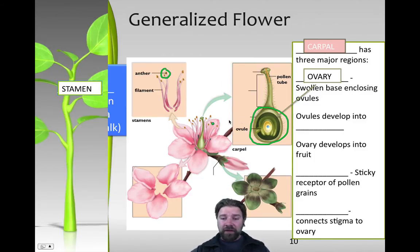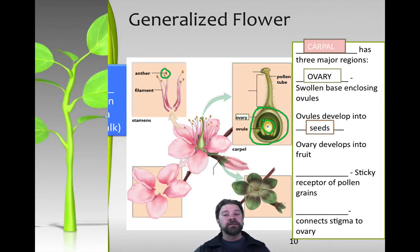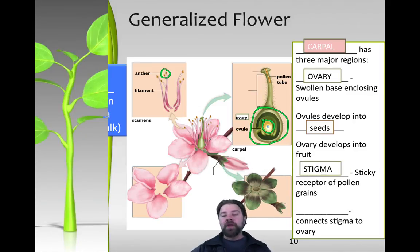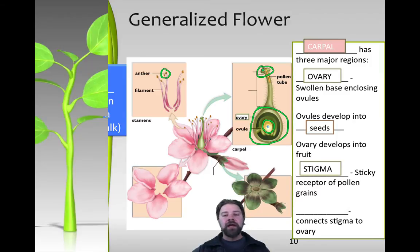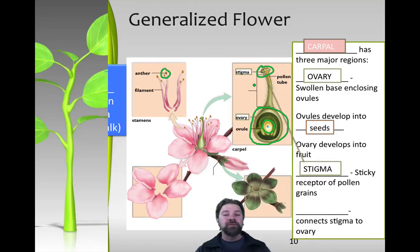The ovary contains ovules, which if fertilized will eventually develop into seeds. The seeds are going to be protected by what the ovary turns into, which is a fruit. The stigma is the tiny tip-top of the structure, which eventually leads down to the ovary. It's a sticky receptor for pollen grains that will eventually travel there. If an insect or other animal brings pollen, the stigma is the place that begins the fertilization process.